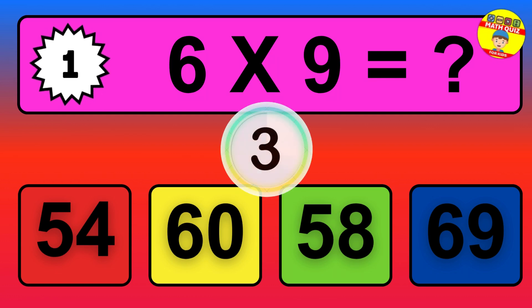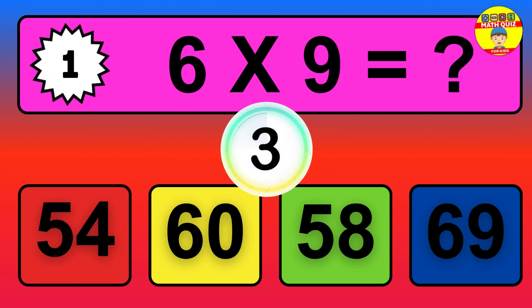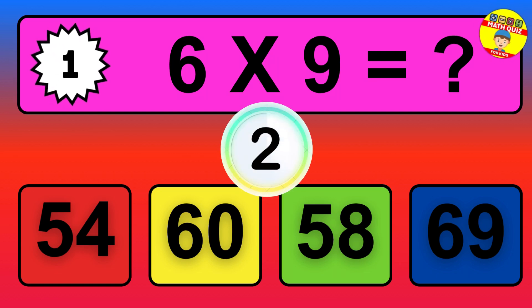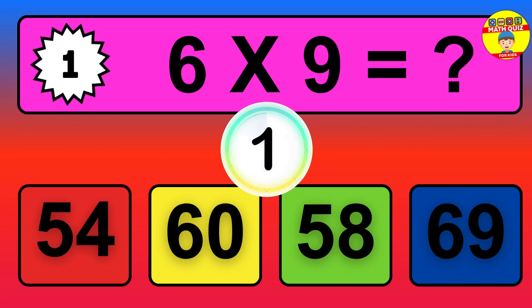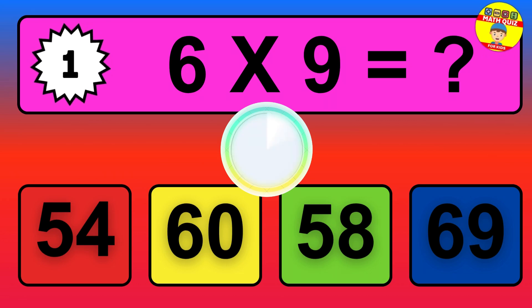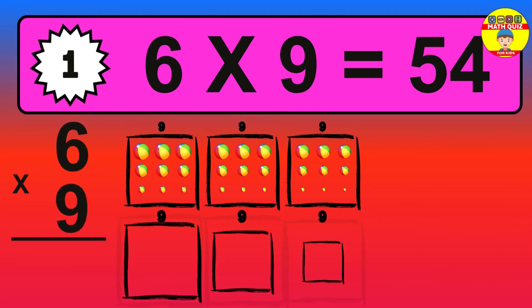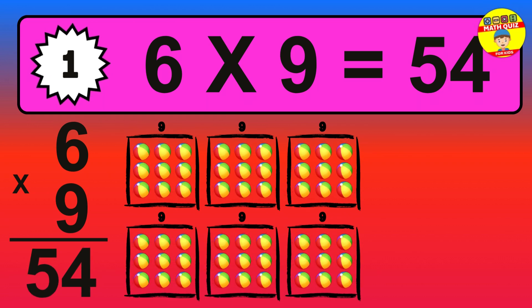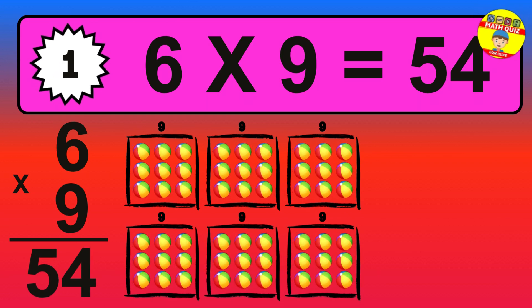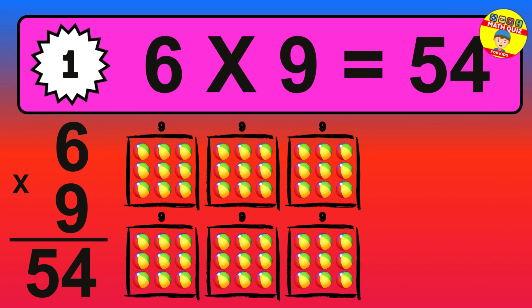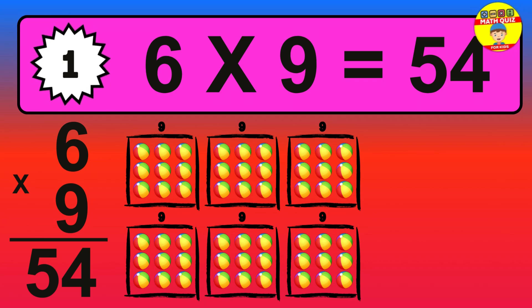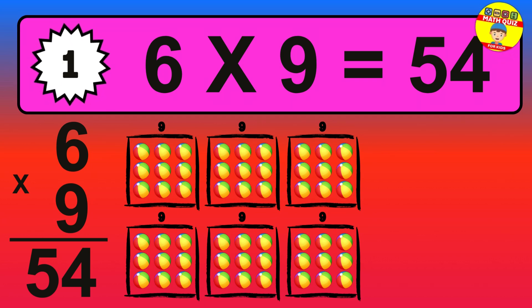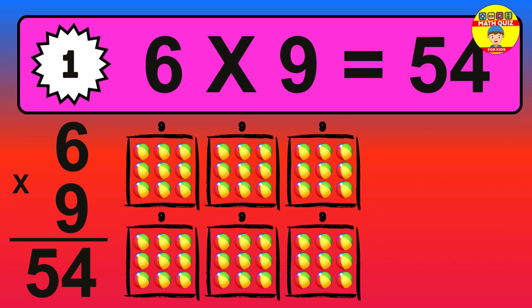Question one: six times nine equals what? The answer is six times nine is fifty-four. To calculate, we have six groups with nine balls each one. So how many balls do we have? Fifty-four balls.